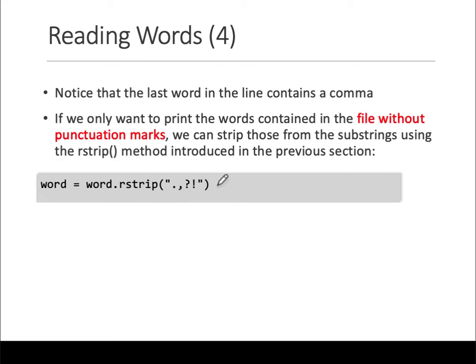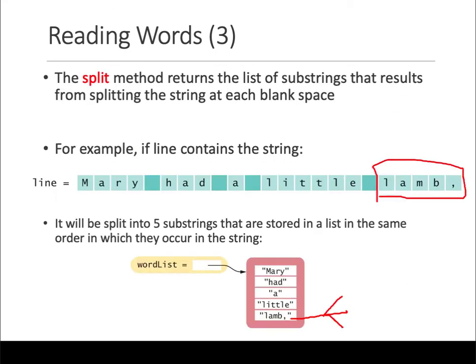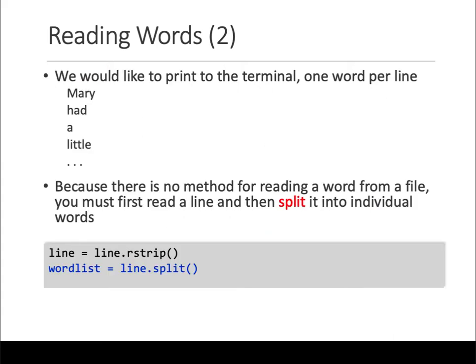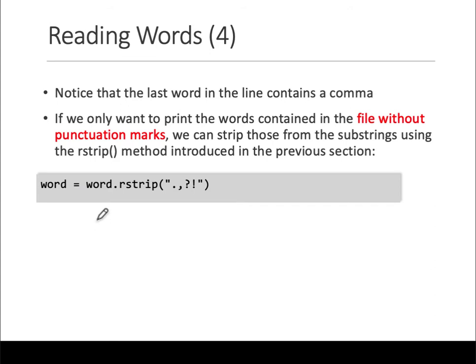Unless you want to remove them — then you have to explicitly provide that list of characters to remove. You take each word, apply rstrip, and inside rstrip you provide whatever characters you want to be thrown out and not considered part of that word.